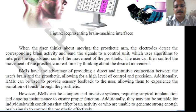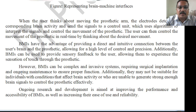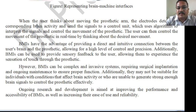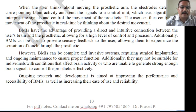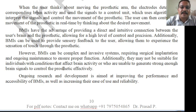When the user thinks about a desired movement, the signal is processed and the prosthetic performs that function. Advantages of BMI include a direct and intuitive connection between the user's brain and the prosthetic, allowing higher levels of control, precision, and even sensory feedback — the user can experience the sensation of touch through the prosthetic. However, limitations include complexity, invasive surgical implantation, ongoing maintenance, and unsuitability for individuals with brain deficiency or inaccurate brain signals.